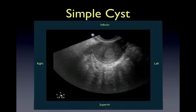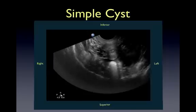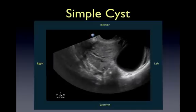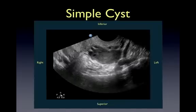Here is an example of a simple cyst on the left ovary. Note the thin wall and the anechoic fluid within it. A closer view shows some follicles within the left ovary inferiorly.